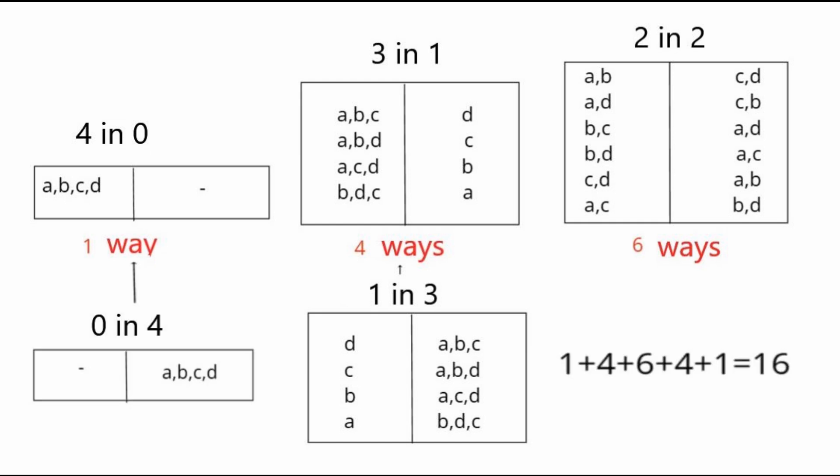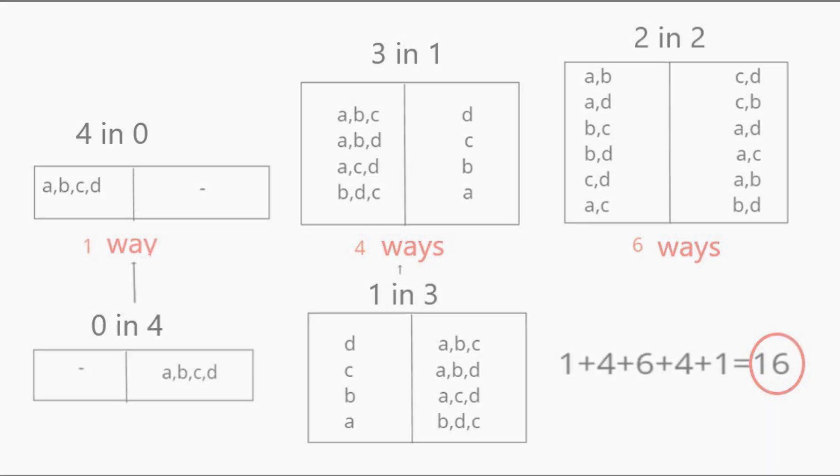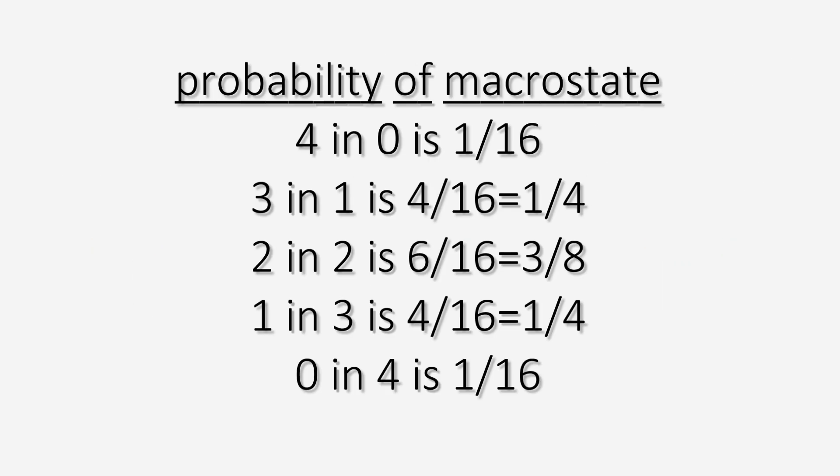So there are a total of one plus four plus six plus four plus one equals 16 microstates when distributing four molecules between the two halves of a container. Now let's find the probability of each macrostate by dividing the number of microstates that can realize it by the total number of all microstates.